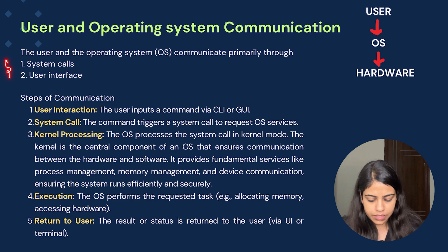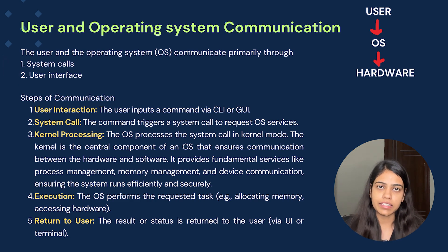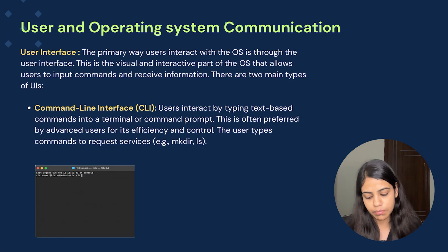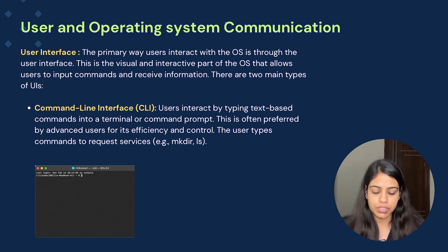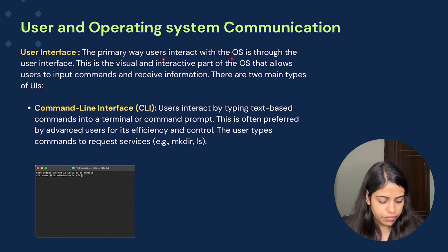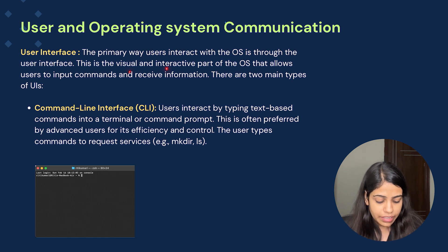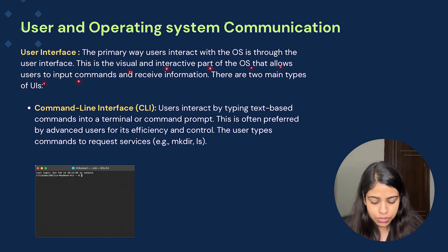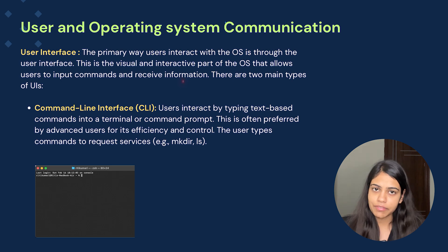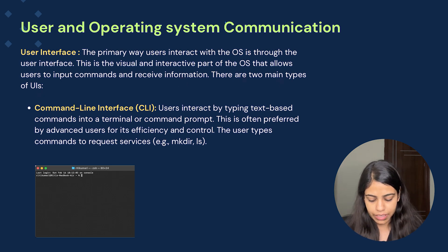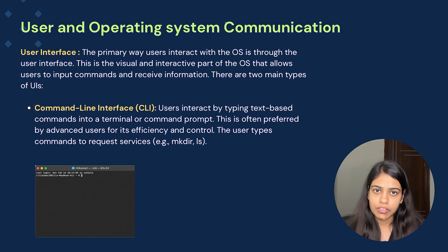As we discussed about these two ways of interacting with the operating system, let's understand more about them. The first is user interface. The primary way users interact with the operating system is through the user interface — this is the visual and interactive part of the OS that allows users to input commands and receive information. There are mainly two types of UI: command line interface and graphical user interface.